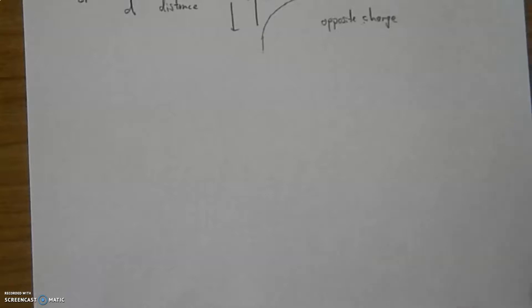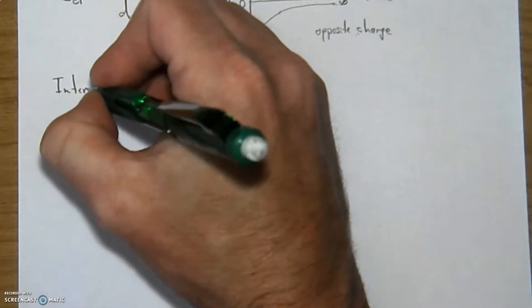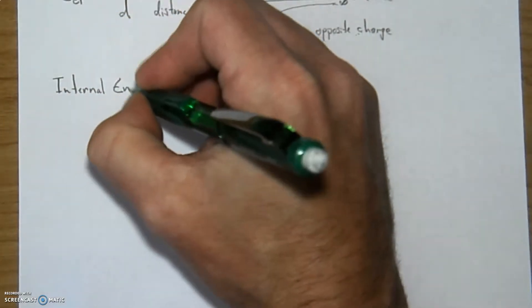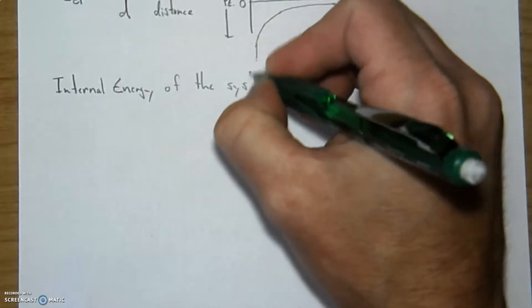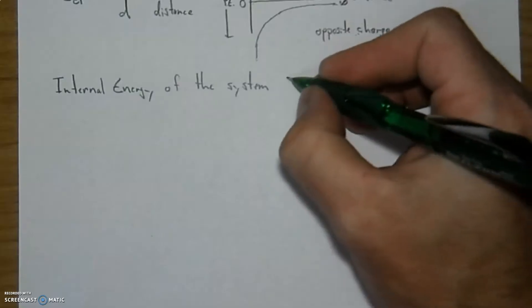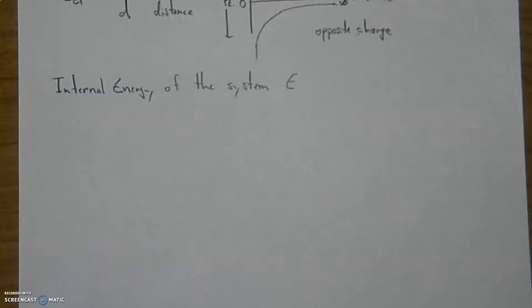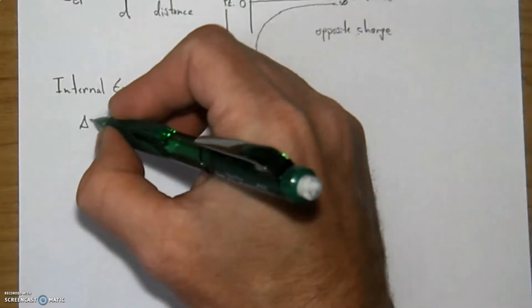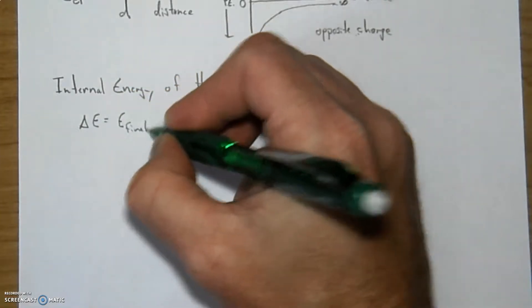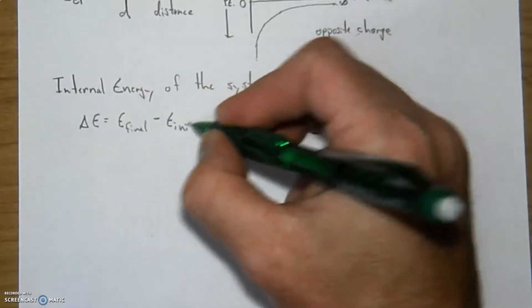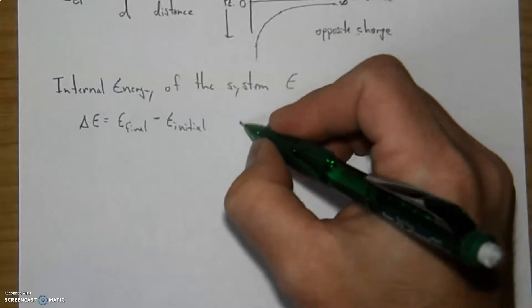Let's look at a formula that we can talk about here. Internal energy of the system, which we will call E. That's what my E's look like. Internal energy of the system. Now, if we're looking at a change in of a system, we'll call it delta E, which is based upon the final energy of the system in comparison to, or minus, the energy at the beginning, the initial energy.